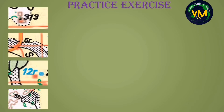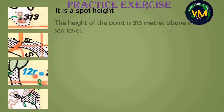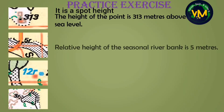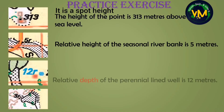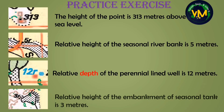Now let's do some practice exercises — do not take more than 4 minutes to complete these four. The first picture has a dot followed by a number, so it is a spot height — the height of the point is 313 meters above sea level. Second picture: 5R is written near a seasonal river, so the relative height of the seasonal river bank is 5 meters — do not write above sea level. Third picture: 12R is blue in color near a perennial lined well, so the relative depth of the perennial lined well is 12 meters. Last picture: 3R is near the embankment of a seasonal tank, so the relative height of the embankment of the seasonal tank is 3 meters.